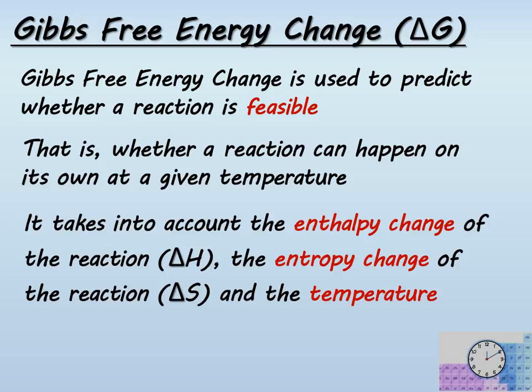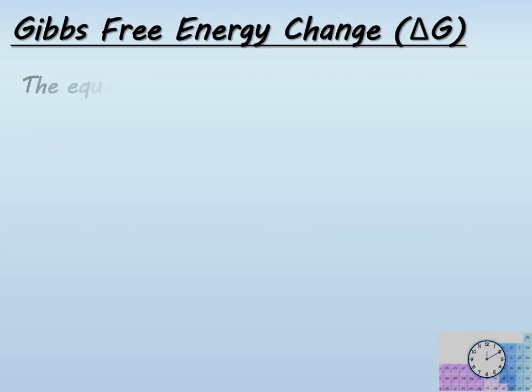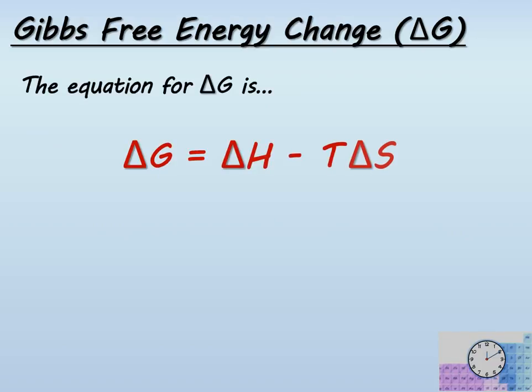The overall factor taking into account then is delta G. It is the factor that is used to decide whether a reaction will take place. It is measured in kilojoules per mole. The equation to calculate delta G is delta H, the enthalpy change, minus the temperature times the entropy change.